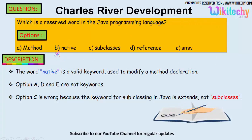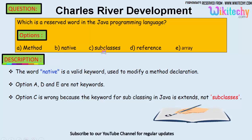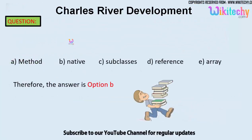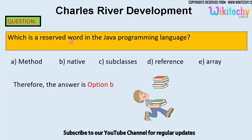Let's see which is the reserved word. The word 'native' is a valid keyword used to modify a method declaration. 'Method' is not a reserved word. 'Reference' and 'array' are not reserved words or keywords. Option C is wrong because in Java they use 'extends', not 'subclasses'.